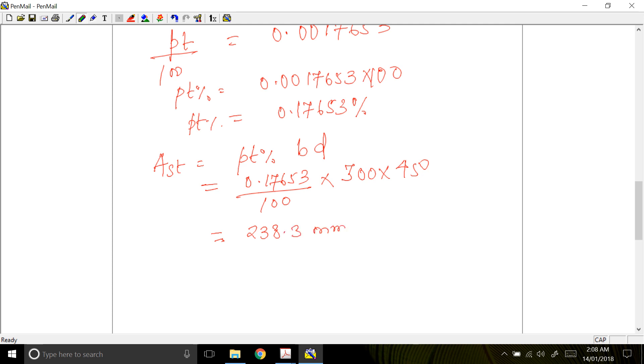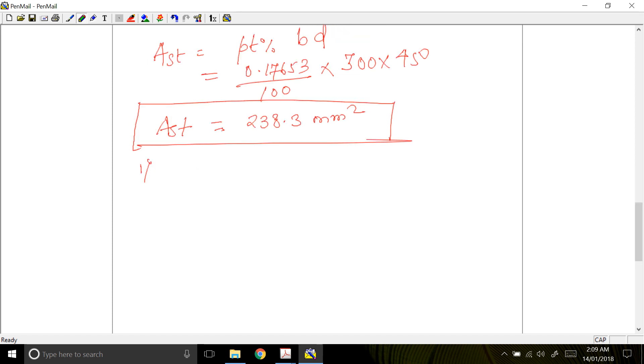Now we have calculated AST. Few checks are required. First check is whether XU is less than your XU limiting. So we have a formula for XU limiting.